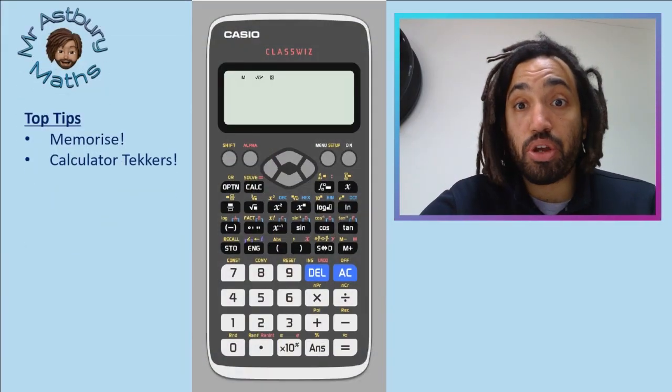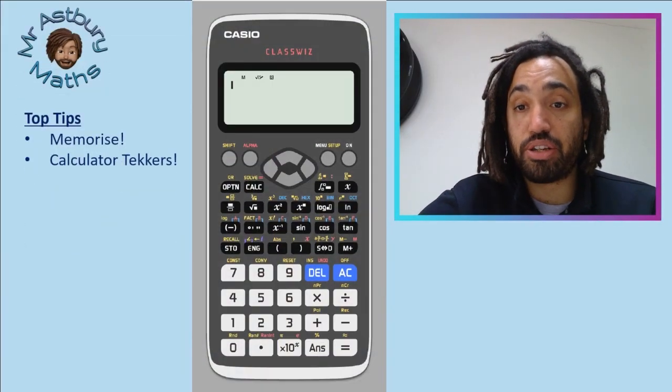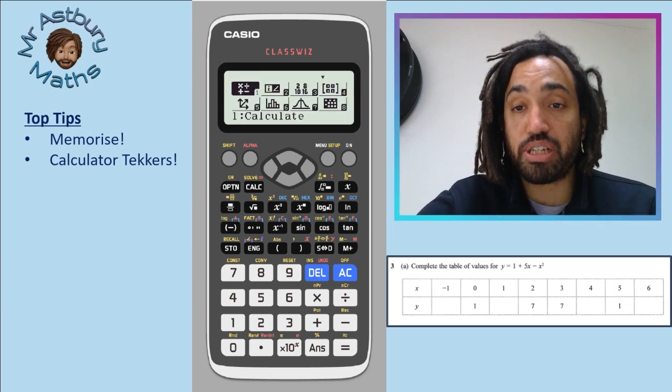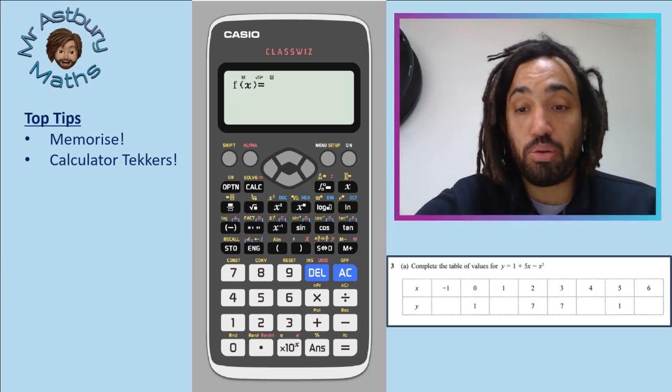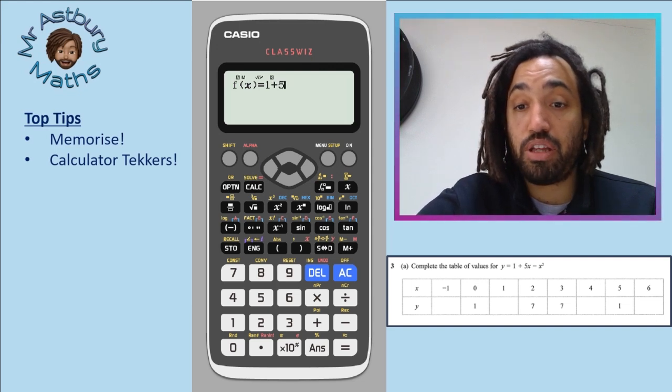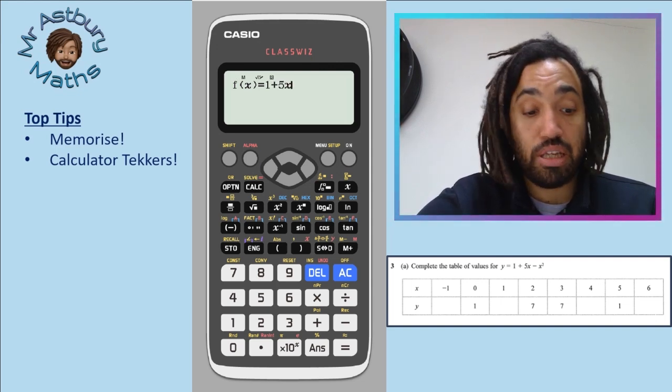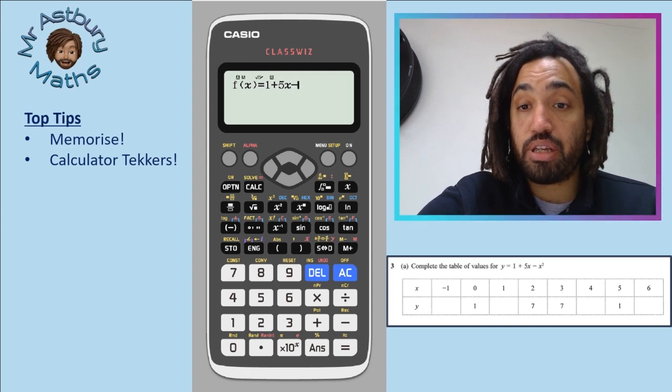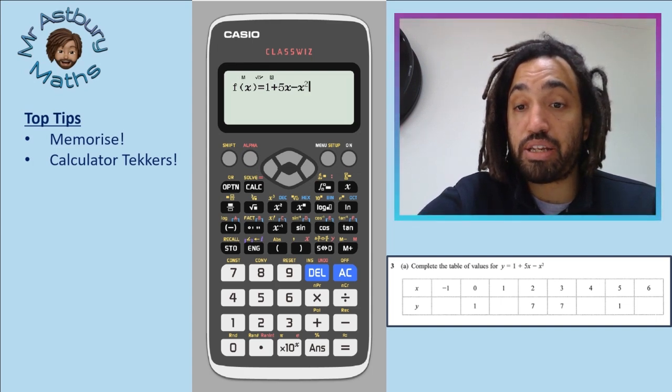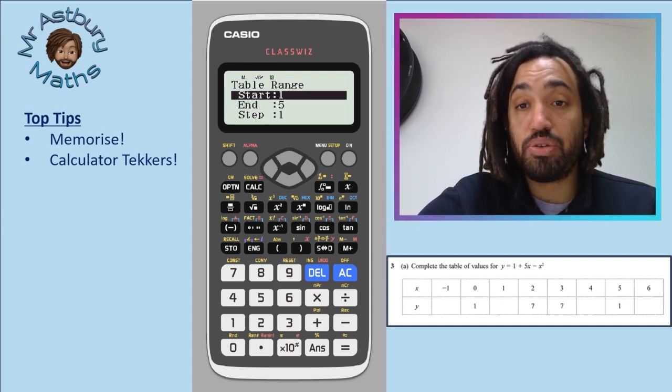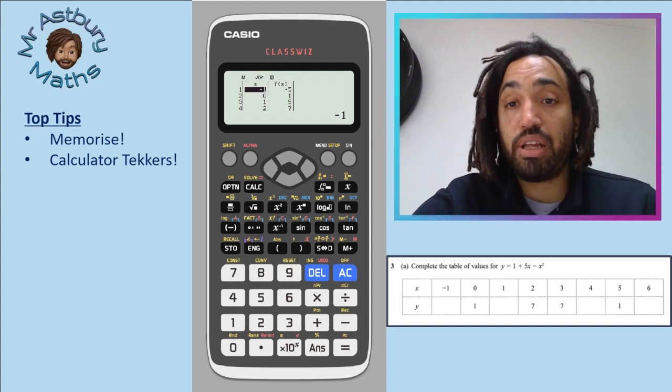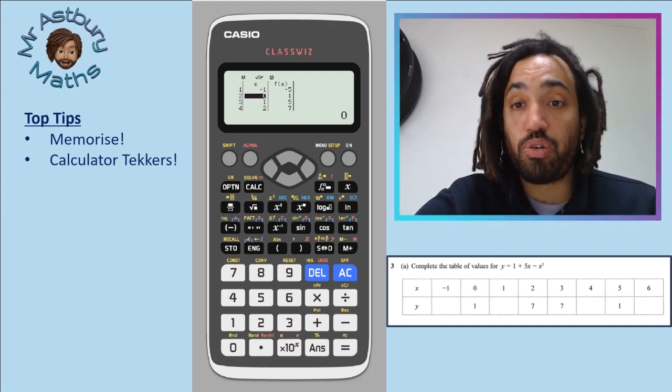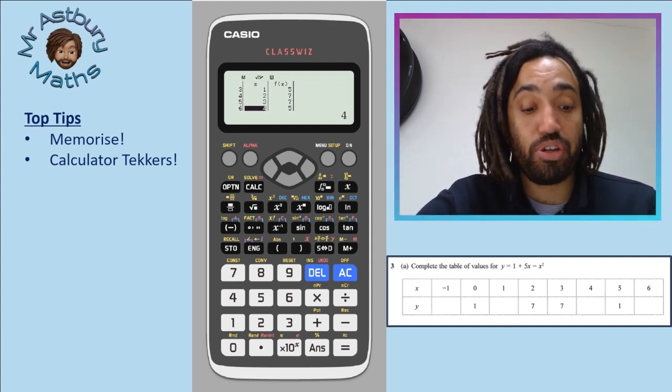Your calculator is so helpful. There's so many things it can do. For example, if you get this question in the exam, you can go down to table function, you can type in one plus five x and then minus x squared. And you can go from minus one to six and going up in steps of one. And right there, it has all of your answers just ready for you to type in.